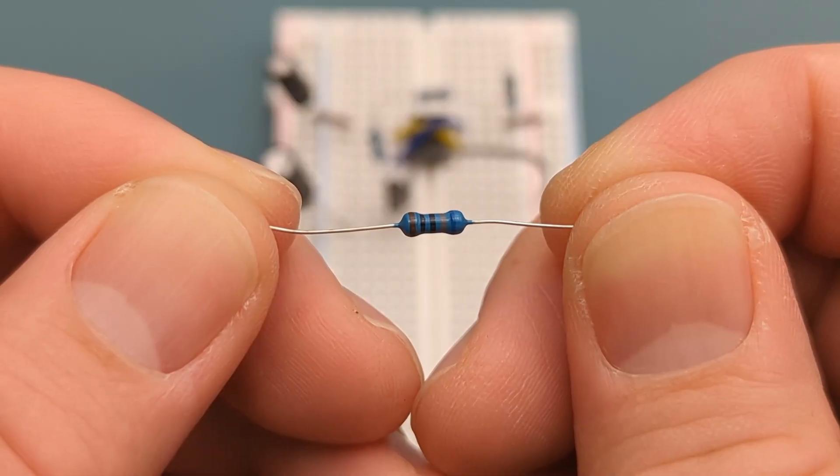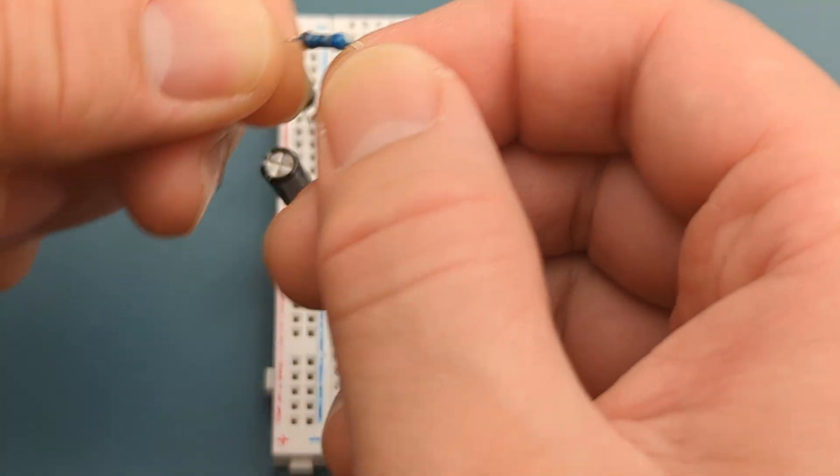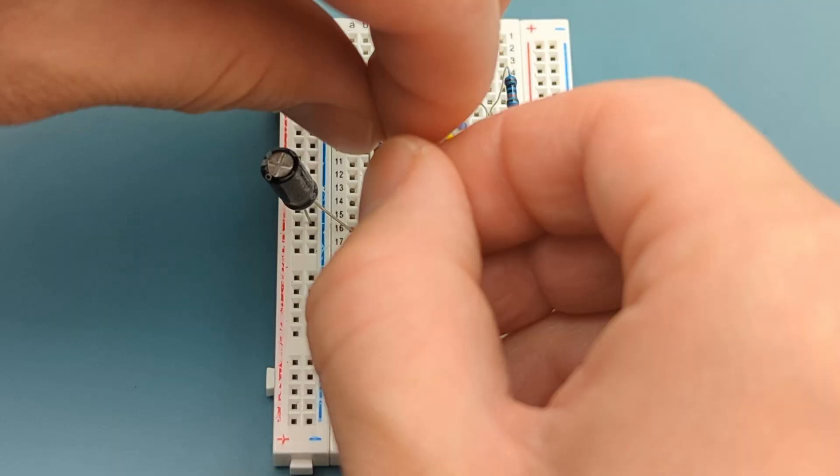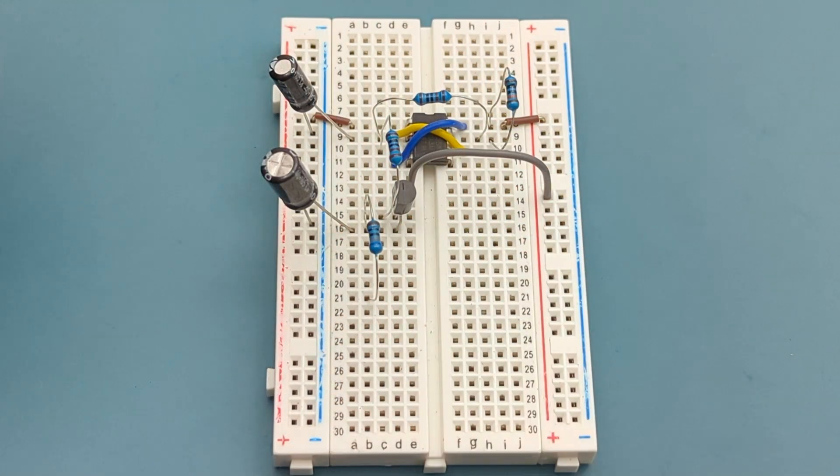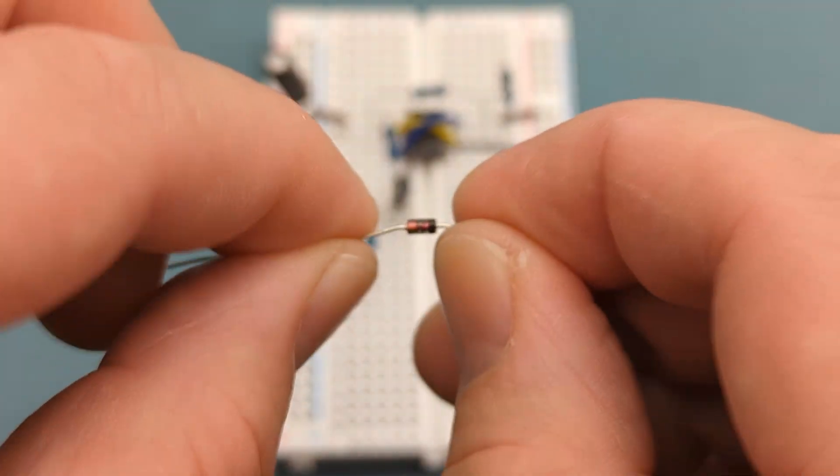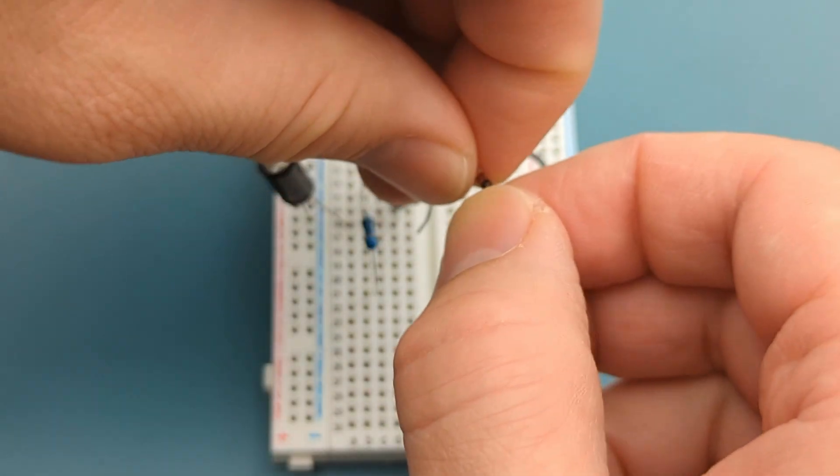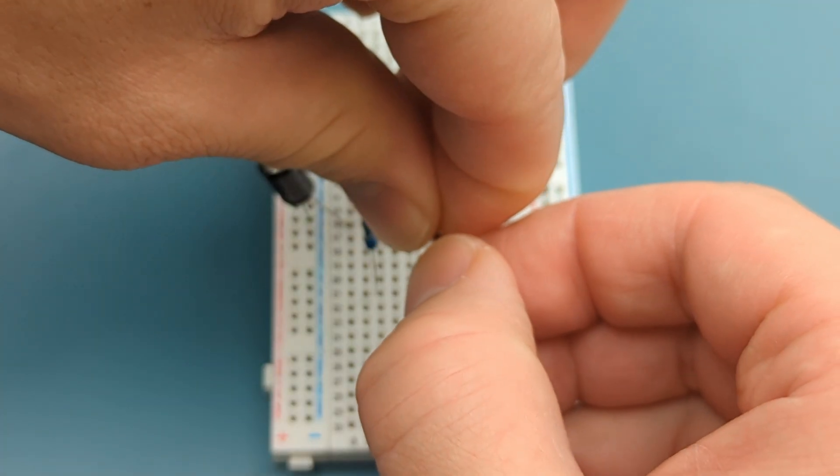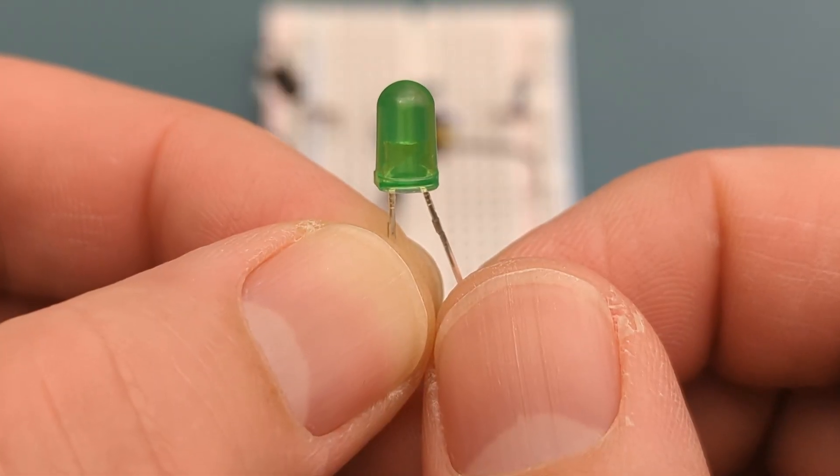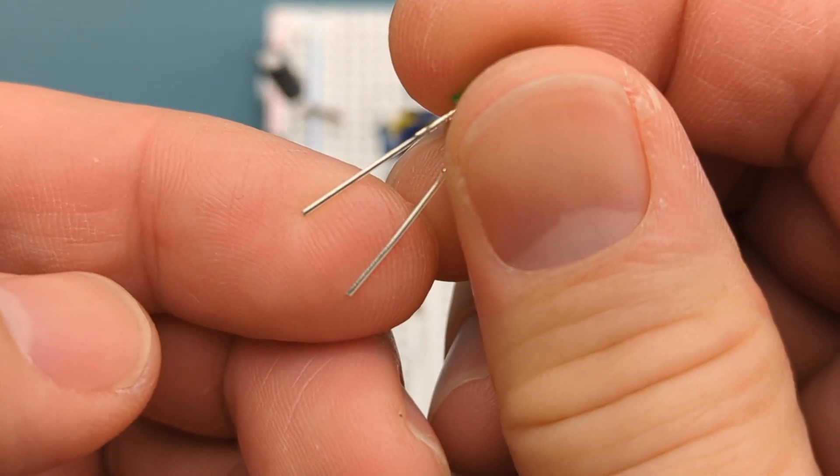Bend the ends of a 680 ohm resistor. Insert a 680 ohm resistor into the same row as the collector of the BC557 and a few rows below it. Bend the ends of a 1N4148 fast switching diode. Insert a 1N4148 diode into the same row as the resistor and a few rows below it. Insert a green LED into the same row as the diode and the negative rail. The cathode is in the negative rail.